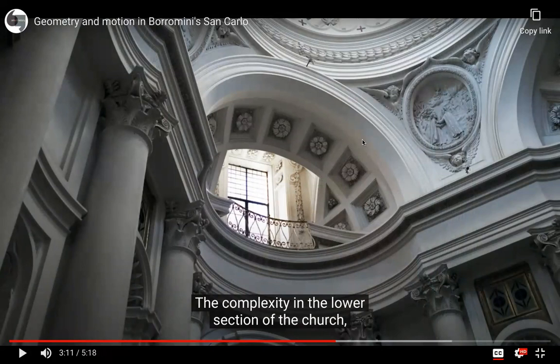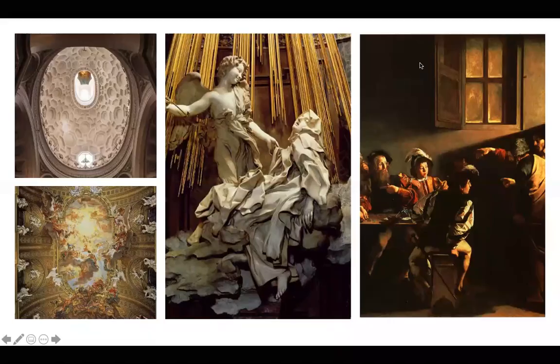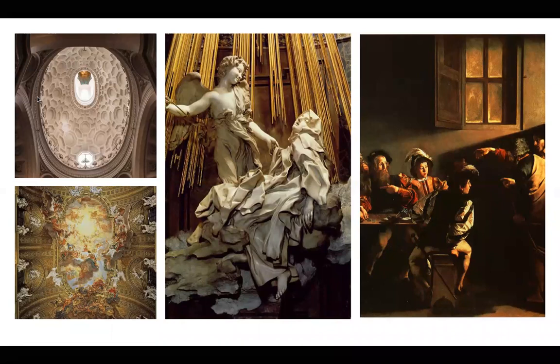I wrote down in my notes: the dove and the triangle in the center of the dome with light coming through hidden windows — it feels like supernatural light coming down. Let's compare how different Baroque artists use light. In Borromini's dome, the lantern is an oculus with architecture continuing up and hidden windows, creating a supernatural, heavenly light — the light of God — illuminating the triangle and dome with radiating lines.